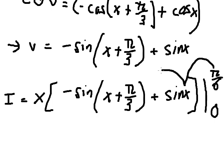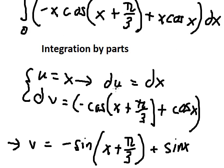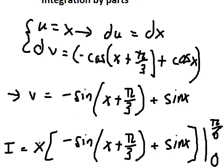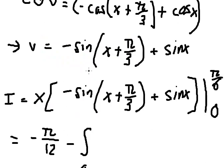I will put π/6 in here and number 0 in here, so we have negative π/12. And now we have the u multiplied by v, so that should be negative, and we have the integration from 0 to π/6.